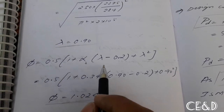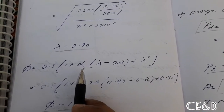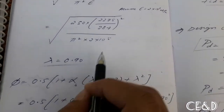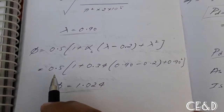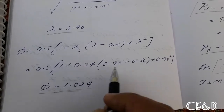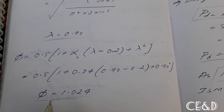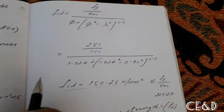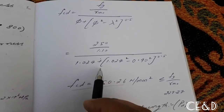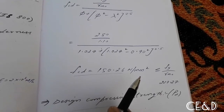Calculate phi: phi = 0.5 × [1 + alpha_B × (lambda − 0.2) + lambda²]. Using alpha_B = 0.34 (from Table 7) and lambda = 0.90: phi = 0.5 × [1 + 0.34 × (0.90 − 0.2) + 0.90²]. Substituting into FCD = FY / (gamma_M0 × (phi + (phi² − lambda²)^0.5)), the answer is FCD = 150.26 N/mm².